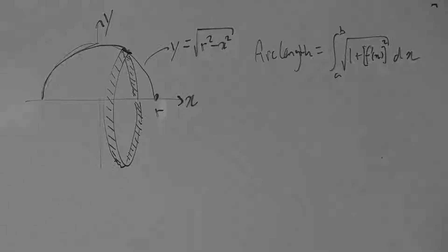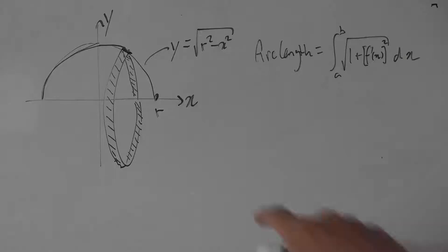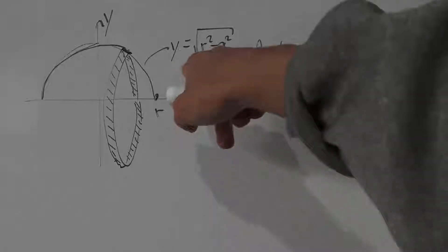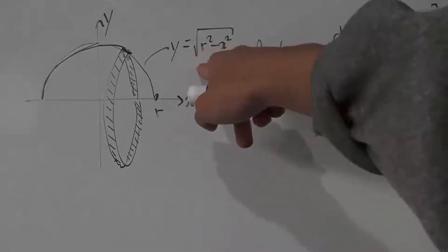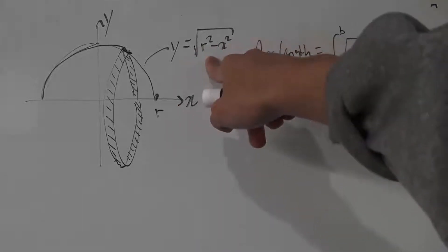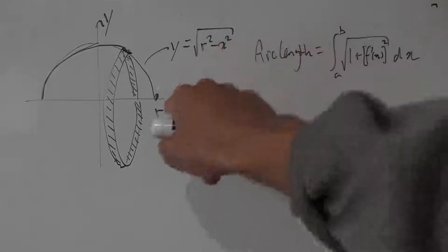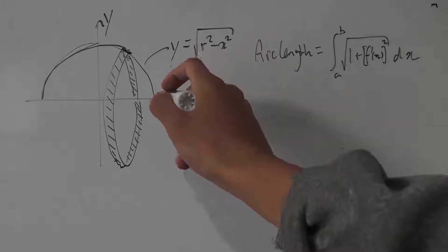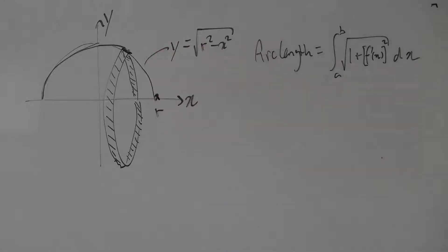Hello everybody, and today we're going to be having a look at the surface area of a sphere using surfaces of revolution. I've already drawn up a quick picture here. This is the function y equals the square root of r squared minus x squared, where r is the radius of the semicircle.